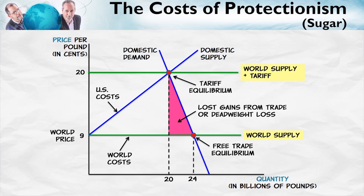What else? The U.S. supply curve can be read as U.S. costs. What happens with the tariff is that instead of producing the sugar in Brazil where it's cheap, we produce the sugar in Florida where it's expensive — where we have to invest more real resources in producing sugar.